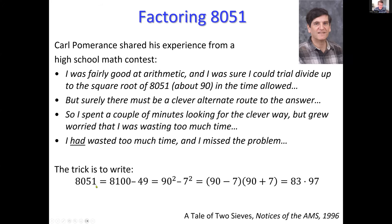Later he figured out the trick: write 851 as 8100 minus 49. 8100 is 90 squared and 49 is 7 squared, so you have 90² − 7² = (90−7)(90+7) = 83 × 97. That trick is actually what later led him to develop very fast factoring algorithms like the quadratic sieve. Shor's algorithm uses a similar idea — finding a non-trivial square root of the identity modulo 851.